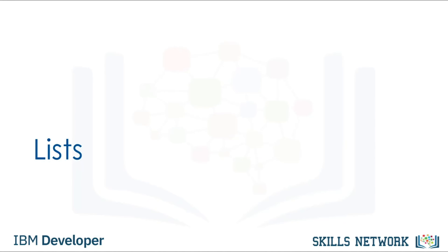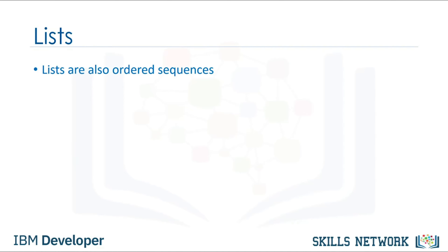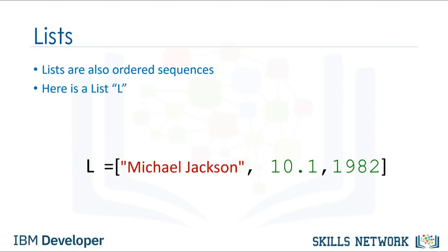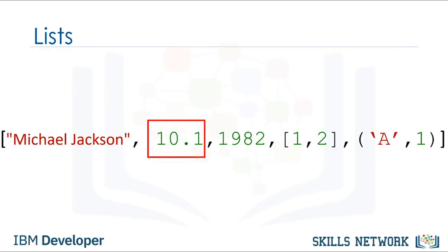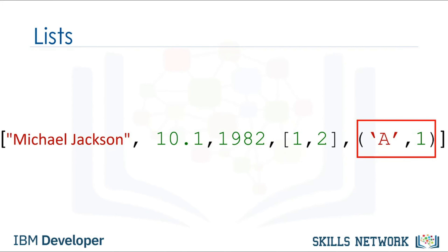Lists are also a popular data structure in Python — lists are also an ordered sequence. A list is represented with square brackets. In many respects, lists are like tuples, but one key difference is they are mutable. Lists can contain strings, floats, and integers. We can nest other lists, tuples, and other data structures. The same indexing conventions apply for nesting.